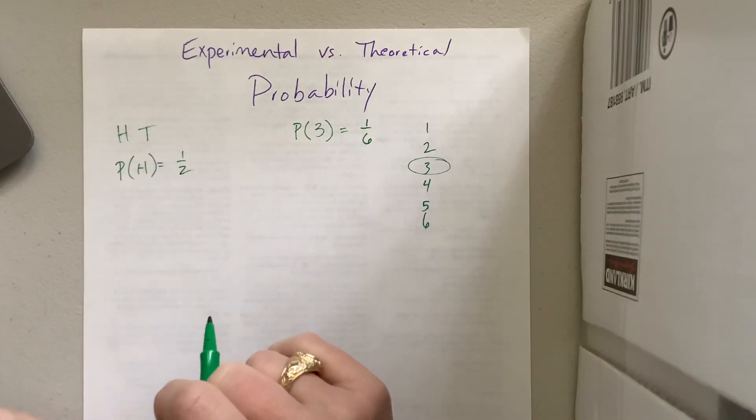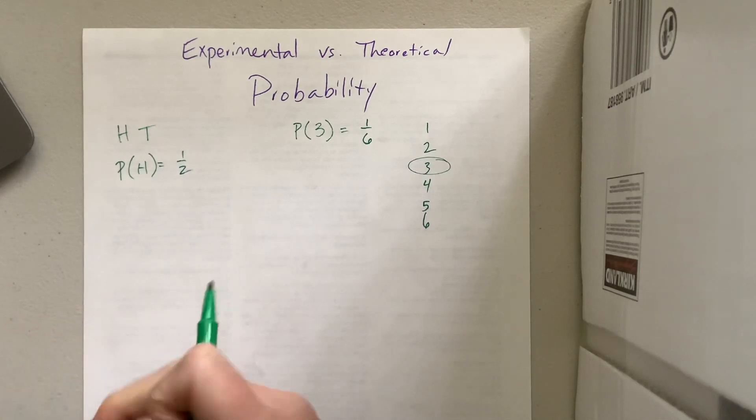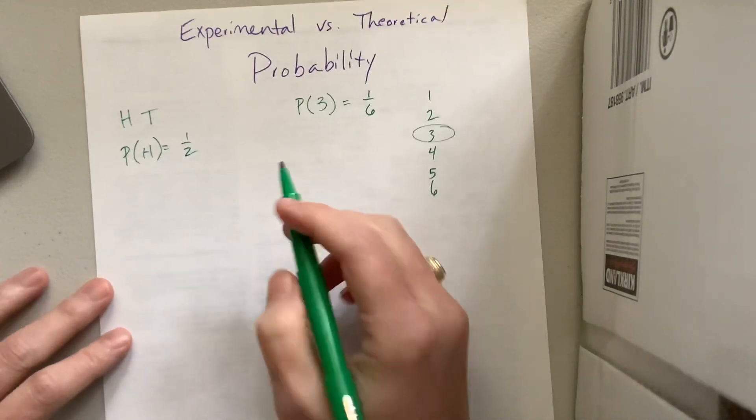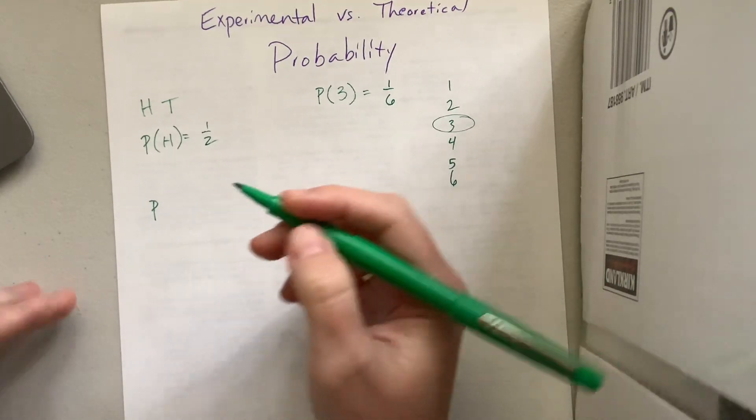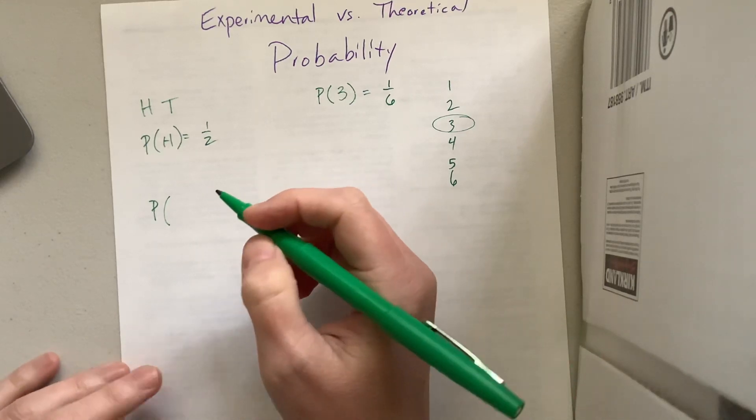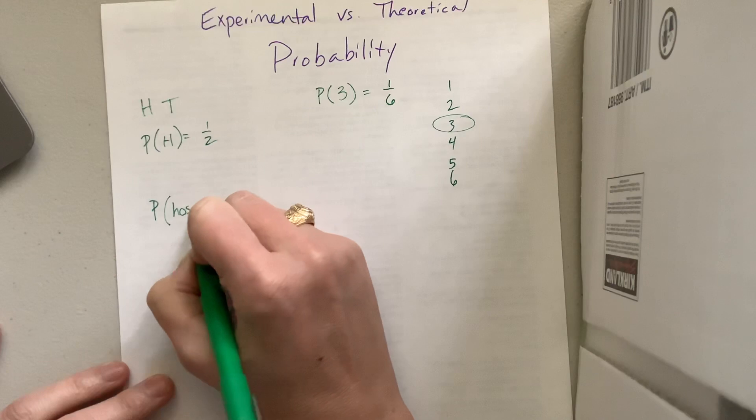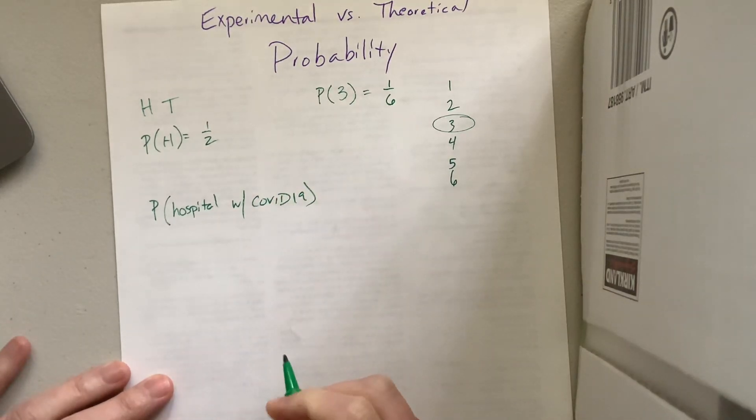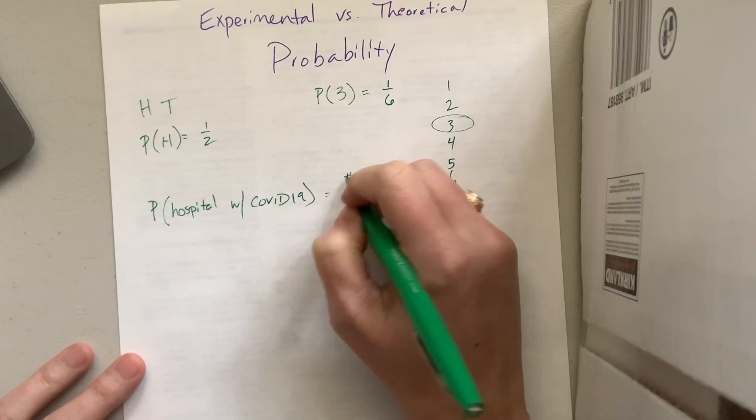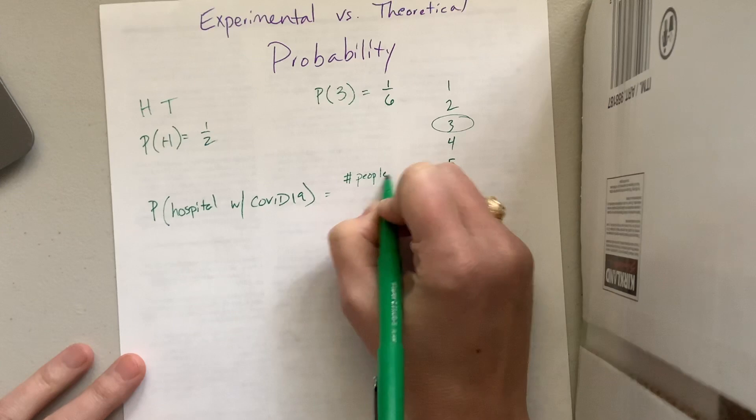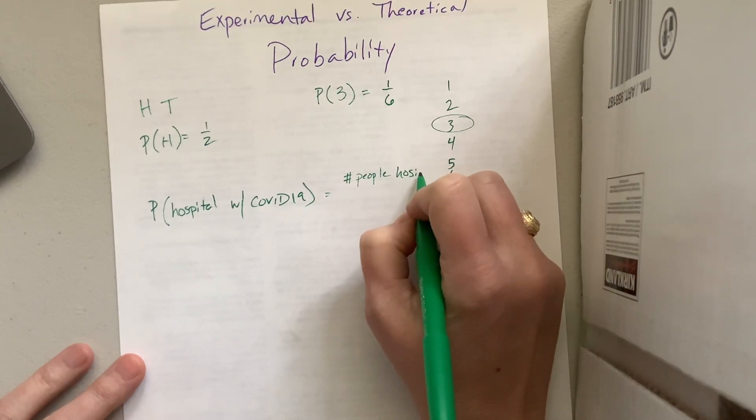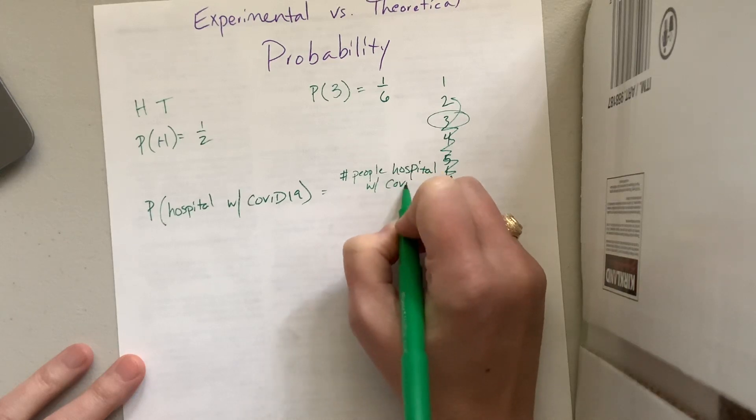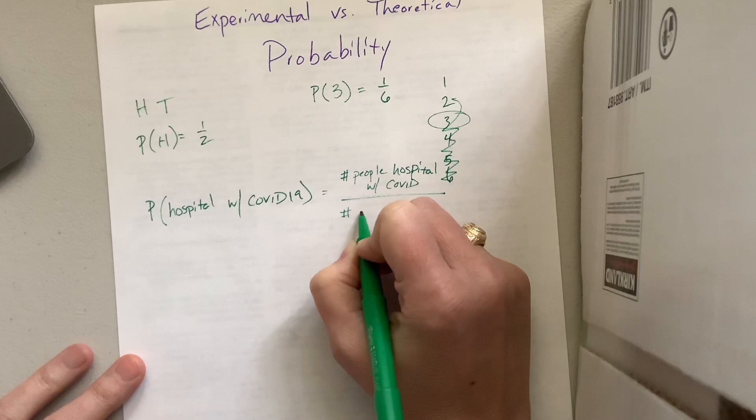Experimental probability is a little more like what we're dealing with right now. What is the probability that the disease gets spread? We don't know necessarily. If we want to know the probability that somebody ends up in the hospital with the coronavirus, with COVID-19, what we would need is the number of people in the hospital with the disease divided by the total number who had the disease.